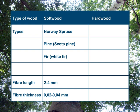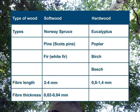Types of hardwood we can list include eucalyptus, poplar, birch, and beech. The average length of hardwood fibres is between 0.8 and 1.4 millimetres. The thickness is between 0.01 and 0.025 of a millimetre.